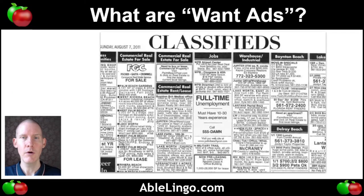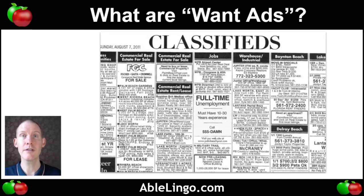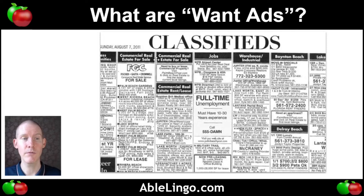So, what are want ads? Want ads are commonly found in the classified section of the newspaper — usually at the back — and people put all their little advertisements in. We can see there are different categories: jobs, commercial real estate for sale, employment. There's a lot of different things people will advertise for — they're trying to sell something or they want something.